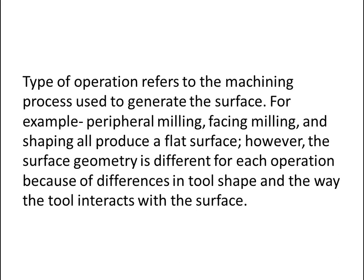Type of operation refers to the machining process used to generate the surface. For example, peripheral milling, face milling, and shaping all produce a flat surface. However, the surface geometry is different for each operation because of differences in tool shape and the way the tool interacts with the surface.